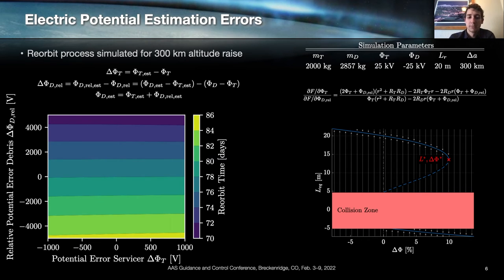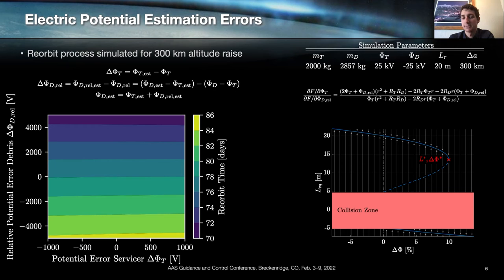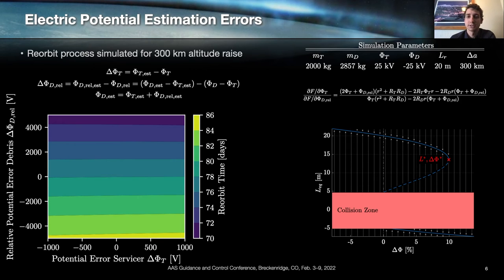For the potential error on the servicer it works the other way around: a positive estimation error results in an increase in re-orbit time, and a negative estimation error results in a decrease in re-orbit time due to under-prediction of the electrostatic force and the resulting closer separation distance.